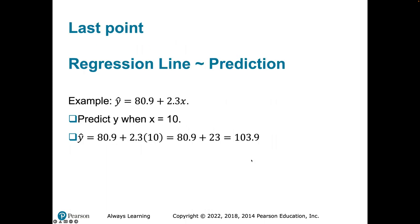The last point: what is a regression line used for? Two-fold — to better explain the relationship between x and y, and for prediction. So if our regression model is Y-hat equals 80.9 plus 2.3x, we could predict y when x equals 10 by inserting 10 into our model and calculating. Our predicted value would be 103.9. There's a lot more to come — we'll get into residuals and more.